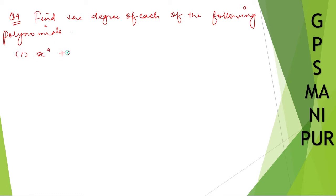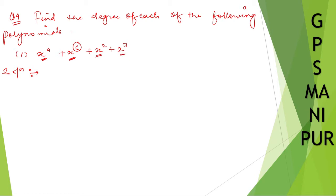Question number 1: x to the power 4 plus x to the power 6 plus x squared plus 2 to the power 7. So if you look here very carefully, what do you mean by degree? Degree means the highest power of the variable. What is the variable here? x. So what is the highest power of x? It will be 6. Some students may think it is 7, but 7 is the power of a constant number, so we are not going to take this one. We will take the highest power of the variable.